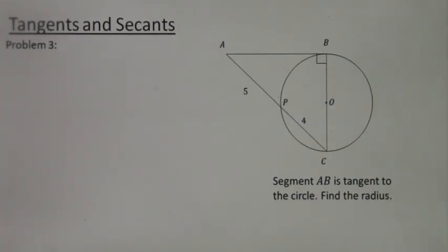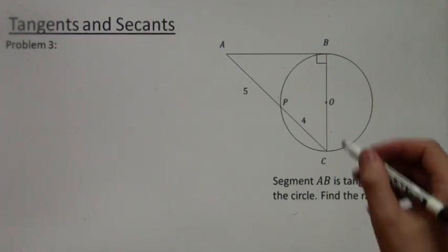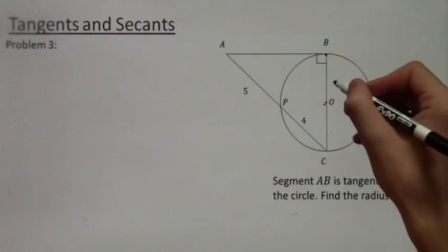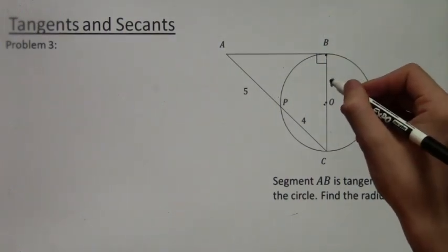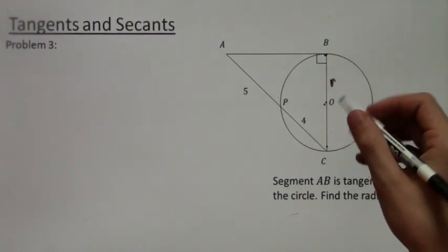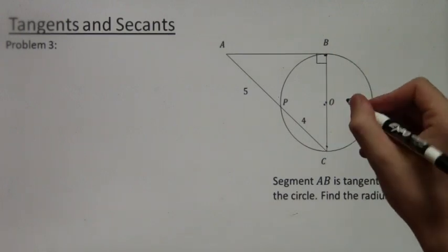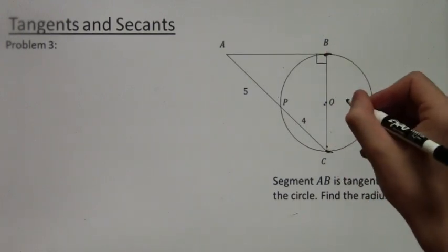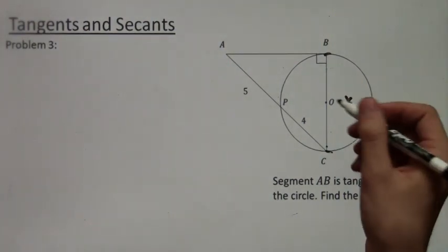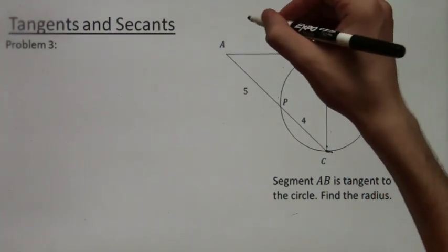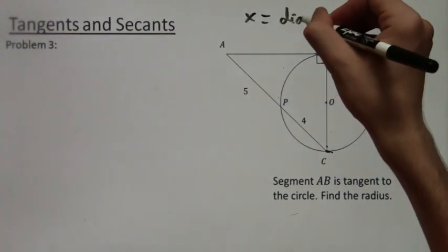Alright, now for our last problem. Segment AB is tangent to the circle. Find the radius. So BC is a diameter. And the radius is from O to B or from O to C. So the first thing we're going to do is we're actually going to solve for the entirety of BC, and then worry about the radius later. So x is the diameter.